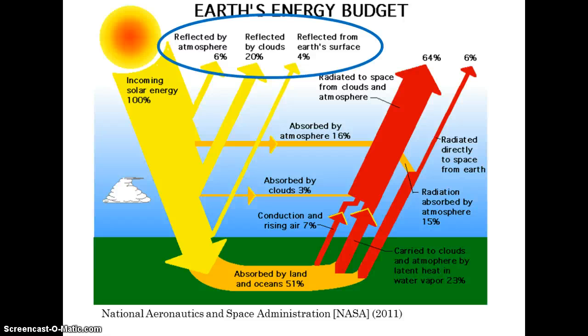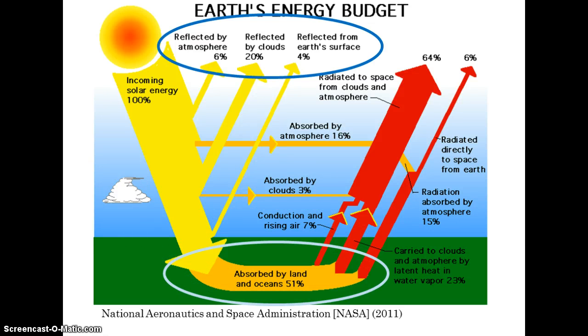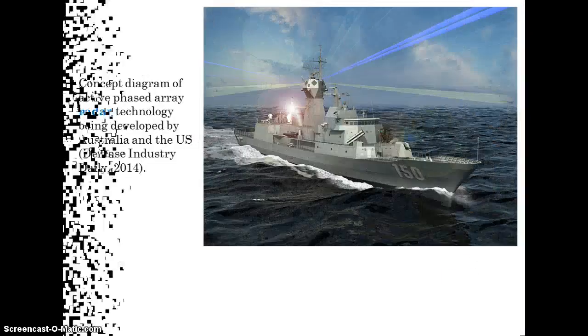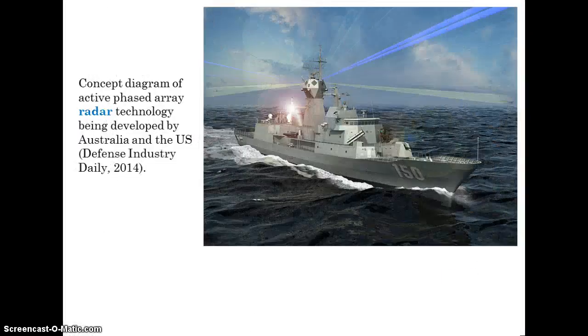Second, radiation from the sun is absorbed at the surface of the Earth. This absorbed radiation is then re-radiated as thermal energy, which can be used in remotely sensed images. A third type of remote sensing includes man-made radiation — for example, radars — which can be used to generate remote sensing imagery.